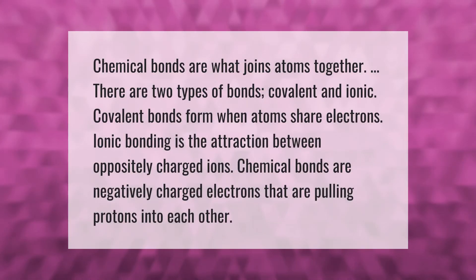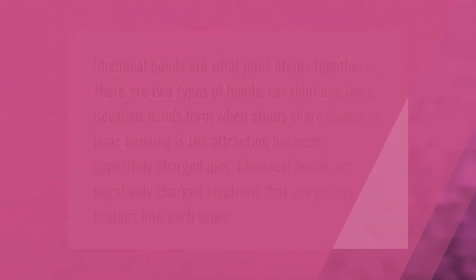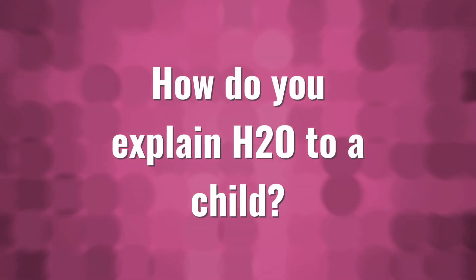Chemical bonds are what joins atoms together. There are two types of bonds: covalent and ionic. Covalent bonds form when atoms share electrons. Ionic bonding is the attraction between oppositely charged ions. Chemical bonds are negatively charged electrons that are pulling protons into each other.